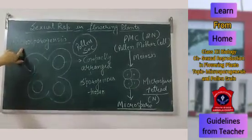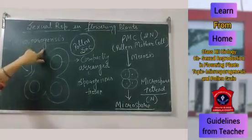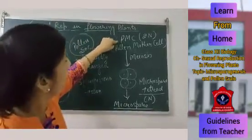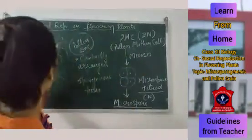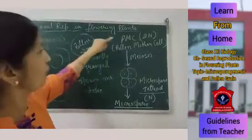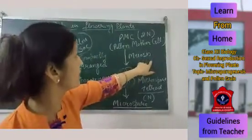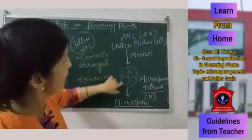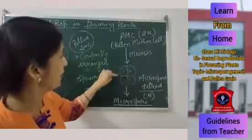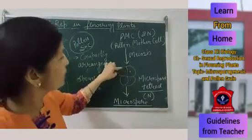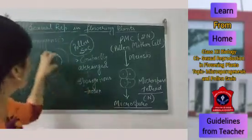Once again, Microsporogenesis is a process in which PMC, the pollen mother cell, will form a microspore through the process of meiosis. PMC will undergo meiosis and a microspore tetrad will form. Initially they are not separate, but later on, upon maturity, these walls will dissociate from each other and they will form individual microspores.